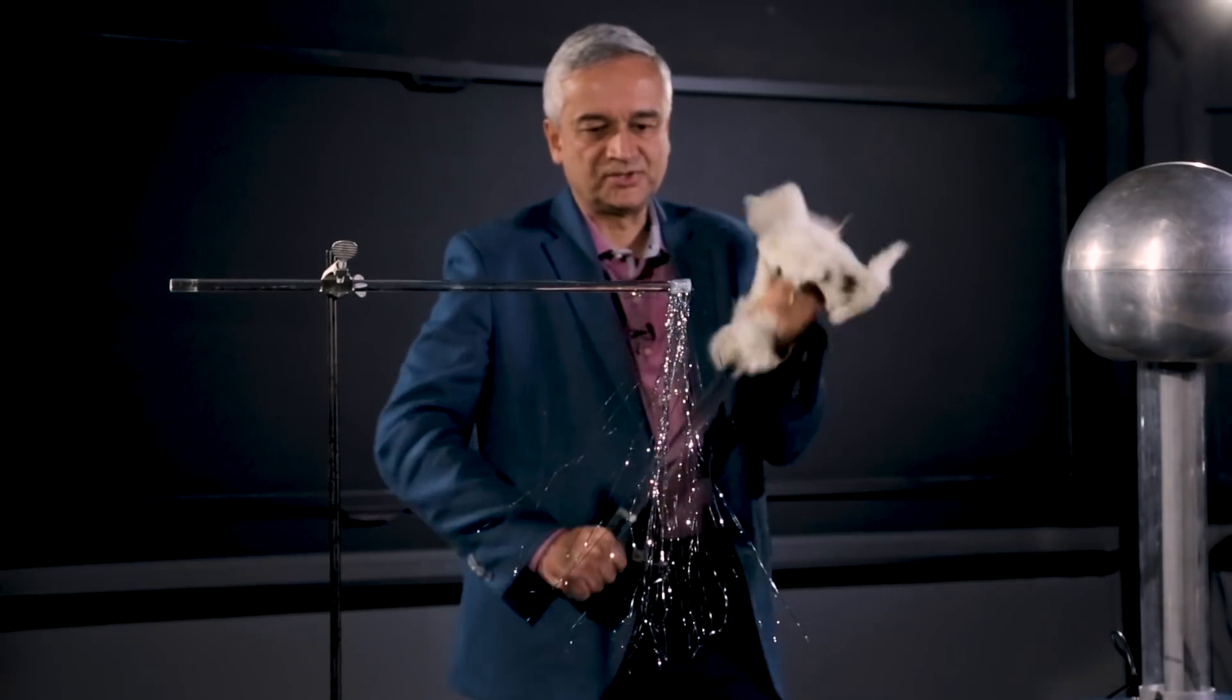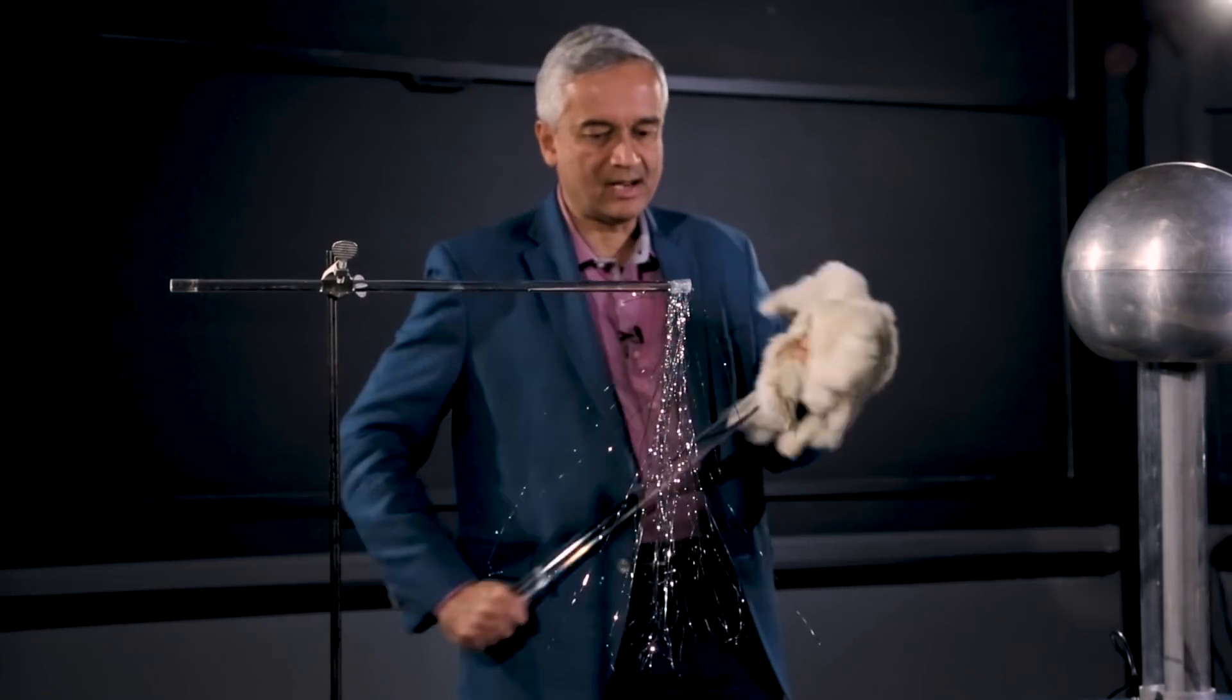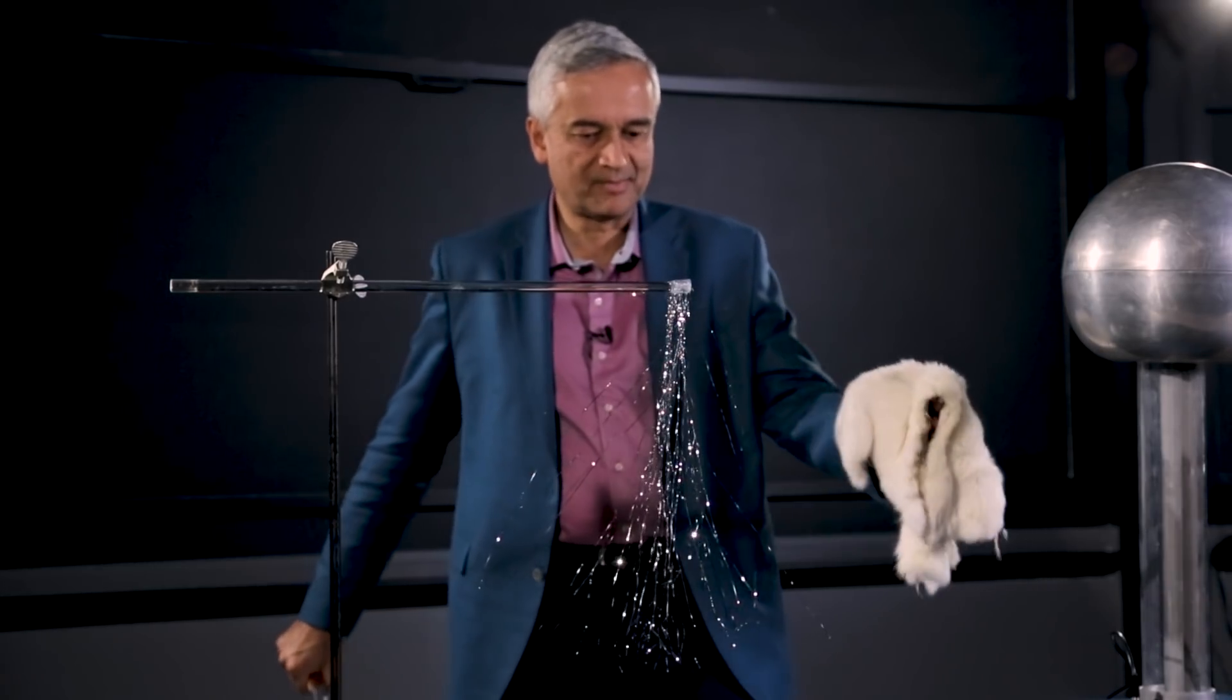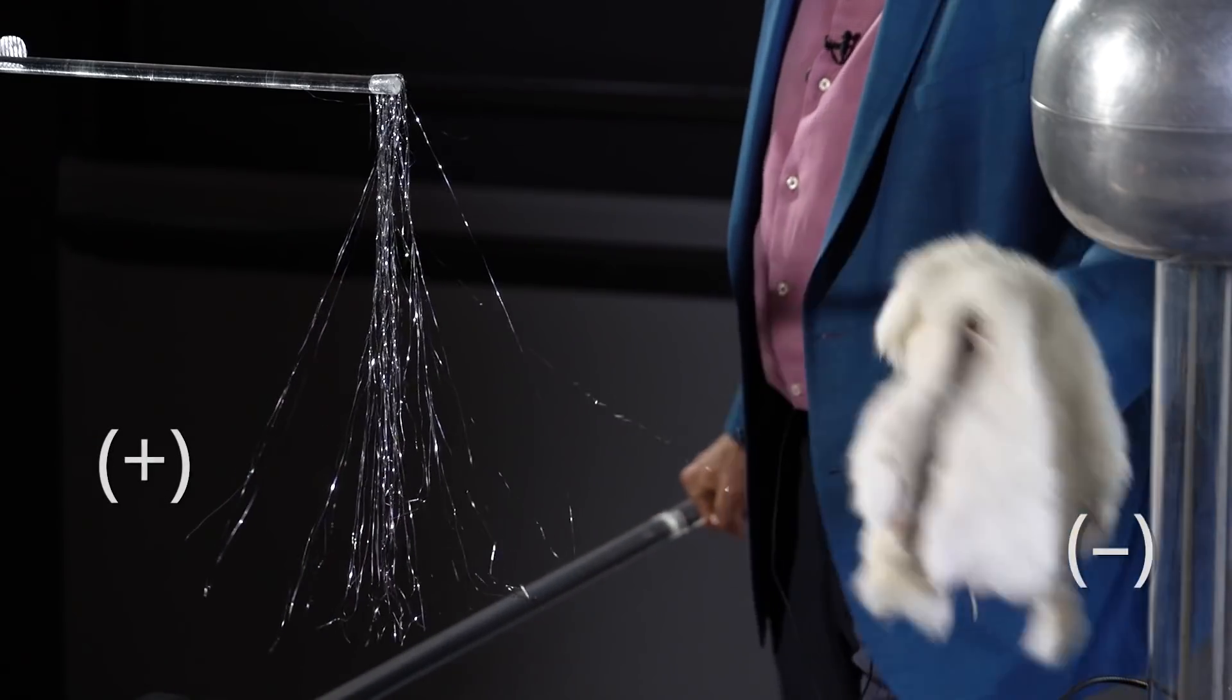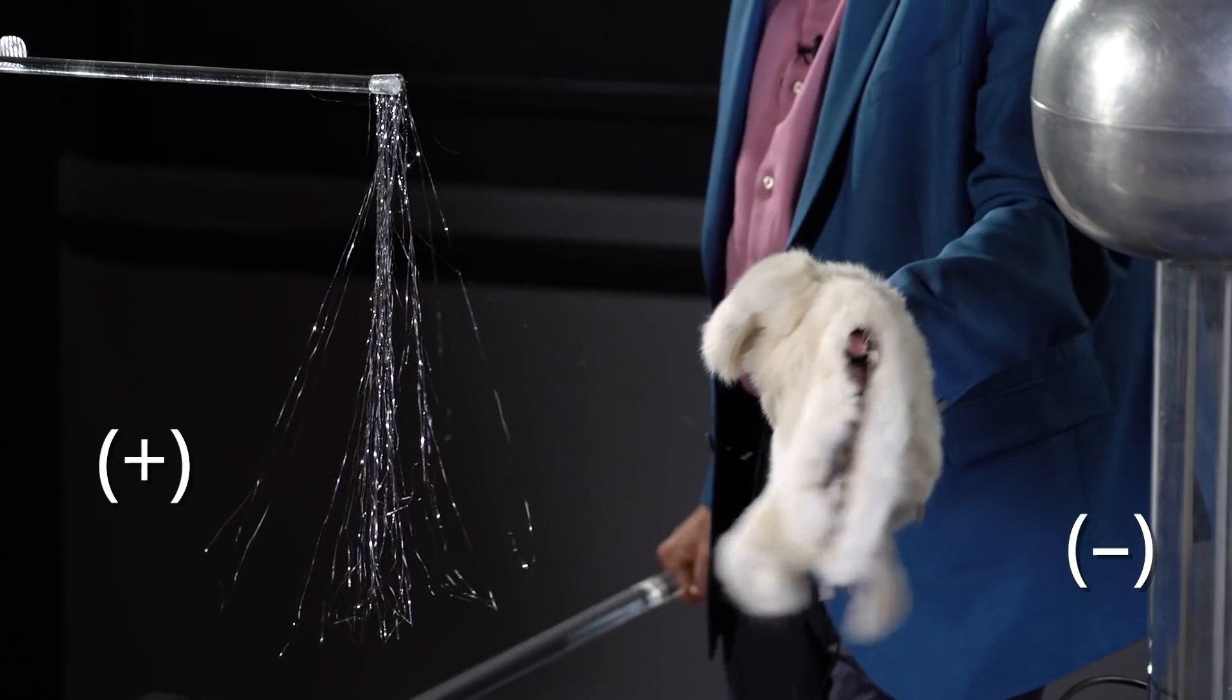Now if charge is conserved, there has to be negative charge somewhere, and it has to be on the fur. So let's see what happens if I bring the fur close to the tinsel, and you see that the fur is attracting the tinsel.